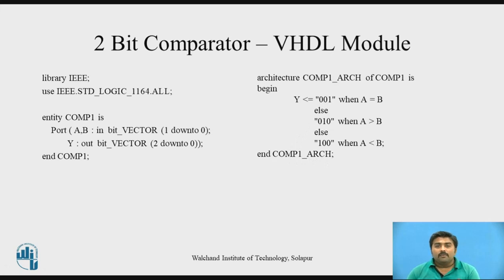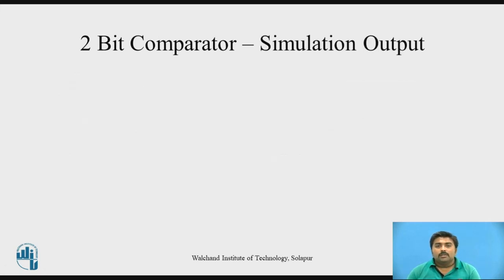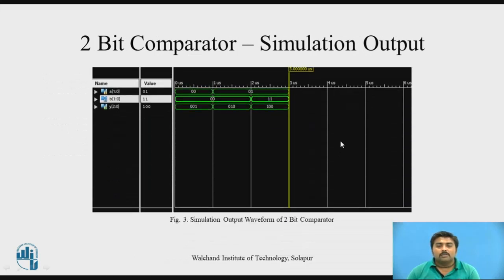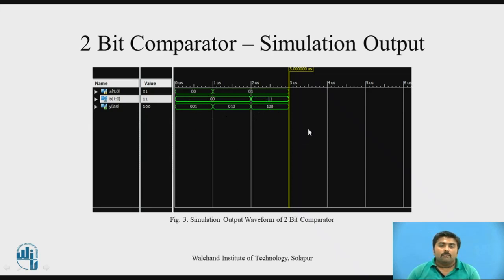Once you are done with the VHDL model, you can verify it with the help of simulation. I use the inbuilt simulation of Xilinx. So these are the simulation outputs. Here you can see 2-bit signals A and B. If both are 00, they are equal, so the output is 001. Then I change A from 00 to 01 and keep B as 00 — in that case the output is 010. Then I keep A as 01 and change B to 11. B is greater, so it is having output 100. So I verified all three cases of the 2-bit comparator. Using simulation, you can verify the working of your VHDL model.